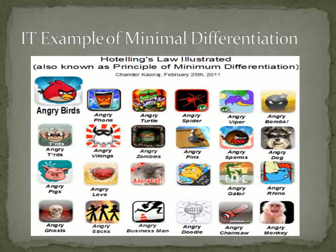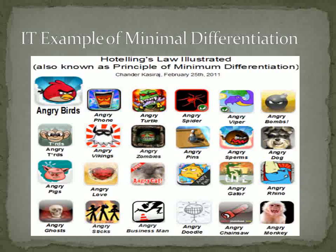An IT example of minimal differentiation: a good example of Hotelling's Law phenomena exists in the vast iPhone app marketplace. The app Angry Birds is one of the top applications in the app marketplace. After it established great success, we witnessed more applications using the same naming convention as the forerunner Angry Birds. Not only is the naming convention similar, but most of these apps use the same concept as Angry Birds. The only distinct difference is that the user must use pigs instead of birds to receive points.